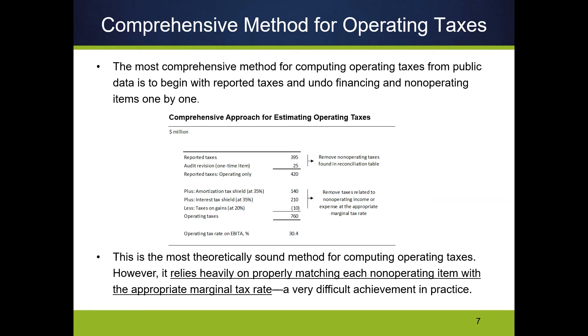We can do this very effectively using what's called the comprehensive method. The comprehensive method relies on properly matching non-operating items like amortization and interest to the appropriate tax rate. This only works if I know the domestic subsidiary was the one that had the amortization and interest, so I can match those to the domestic tax rate when making an adjustment. If I don't know or don't want to guess, then this method isn't going to work.